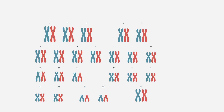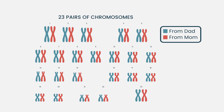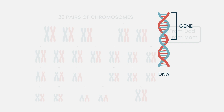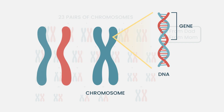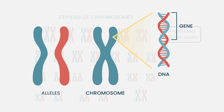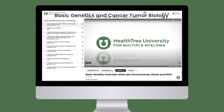Before diving into this lesson, here's a quick genetics refresher. Humans have 23 pairs of chromosomes, one copy from mom and one from dad. Genes, which are made of DNA, are arranged along these chromosomes, meaning we have two copies of each gene called alleles, one inherited from each parent.